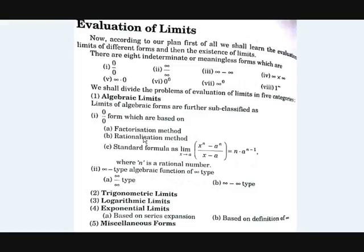For solving equations in the 0/0 form, we have three methods. The first is the factorization method, the second is the rationalization method, and the third uses standard formulae. In our videos, we will first learn the factorization and rationalization methods. Factorization means dividing expressions into factors, as you do when solving quadratic or cubic equations. Rationalization is used when we have nth roots — we rationalize using a rationalizing agent.